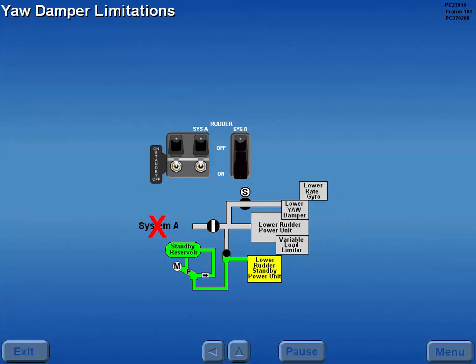The lower rudder standby power unit does not have a load limiter or a yaw damper. Therefore, when operating with the electric standby pump, yaw damper limitations must be observed.